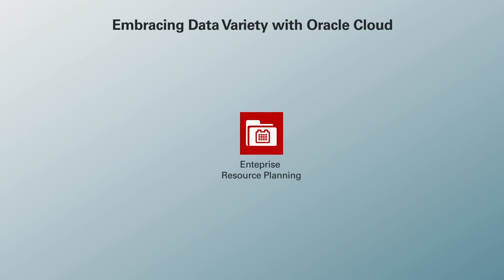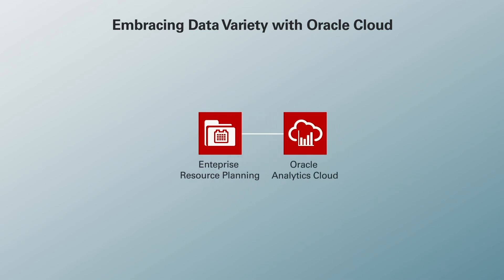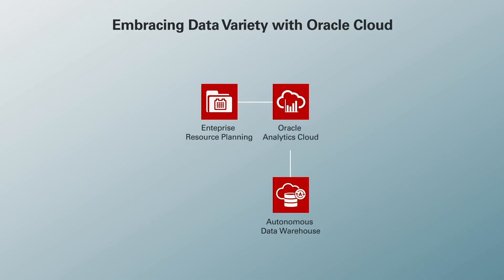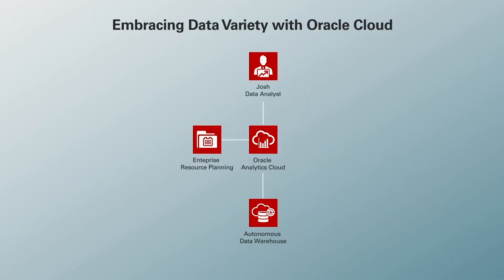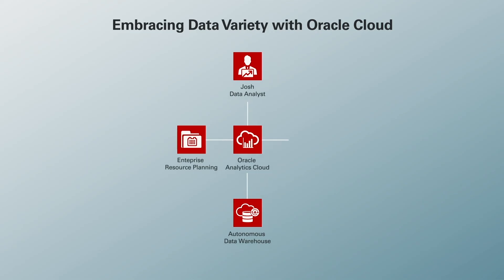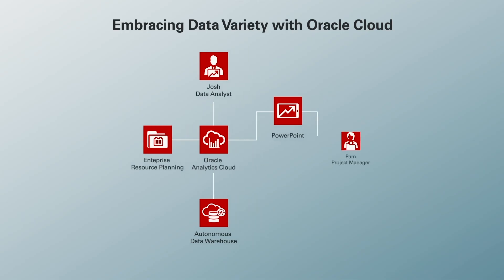Let's take a look at the architecture and see how it interacts with one another. Enterprise Resource Planning is integrated with Oracle Analytics Cloud. Additional data sets are pulled from Oracle Autonomous Data Warehouse, which is also integrated with Oracle Analytics Cloud. Visualizations and what-if analysis are built in data visualization. Finally, the forecasted visualizations are embedded in ERP and sent in PowerPoint to the project manager via email and day-by-day.